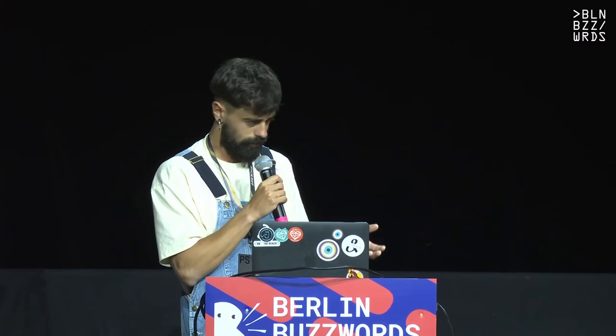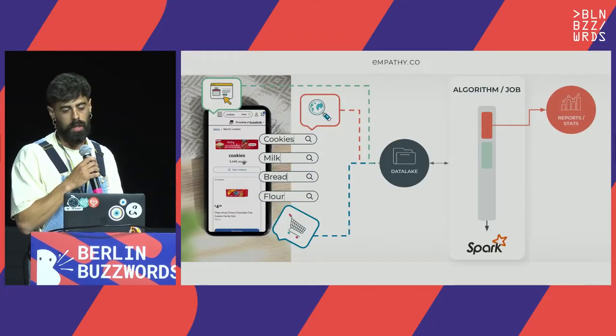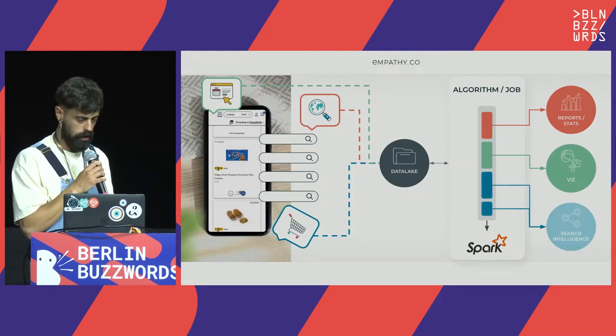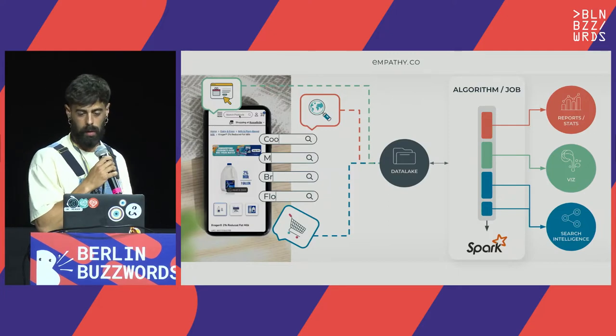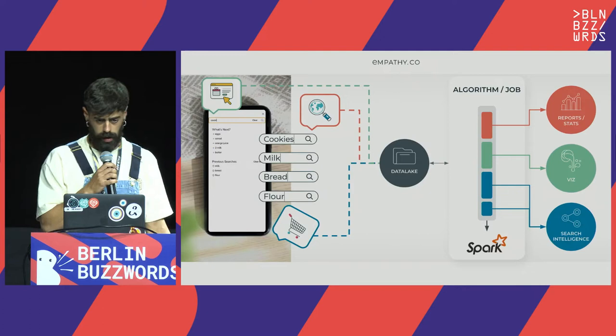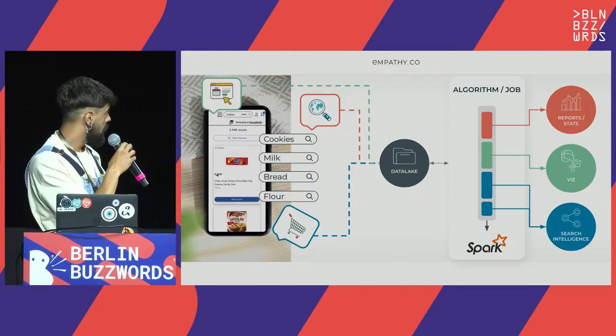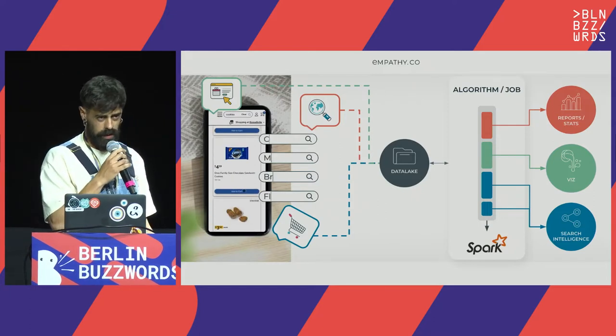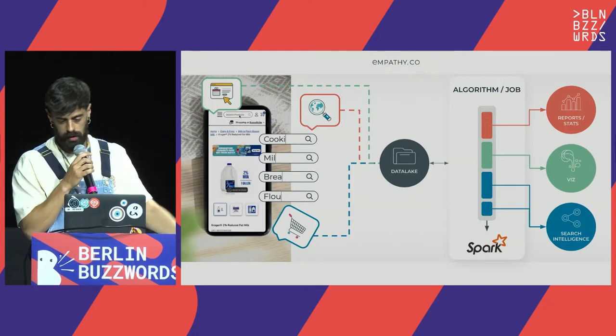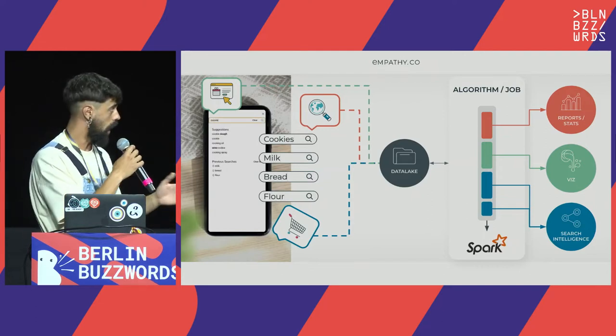We're going to talk a lot about Spark jobs — how we scale solutions and what these algorithms or jobs are — but let's start with some context. We do search, and you can imagine the type of data we collect at empathy. As Danny said, we collect all the information without personal data, location, or anything related to the user. We push all this data into a data lake, and we realized we needed to exploit this data.